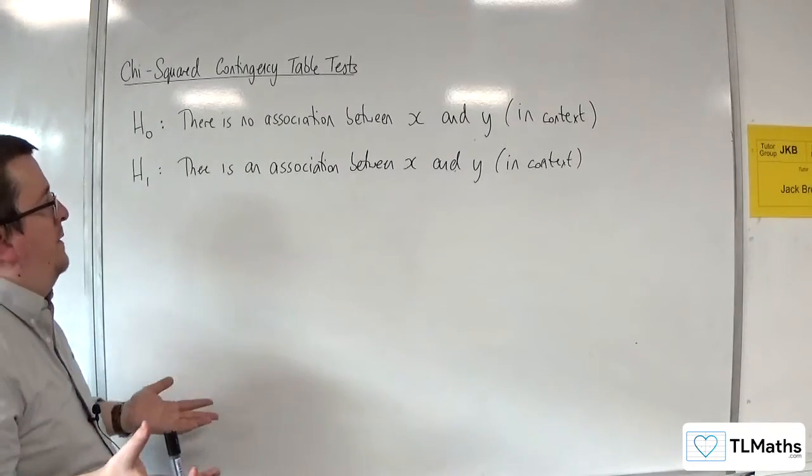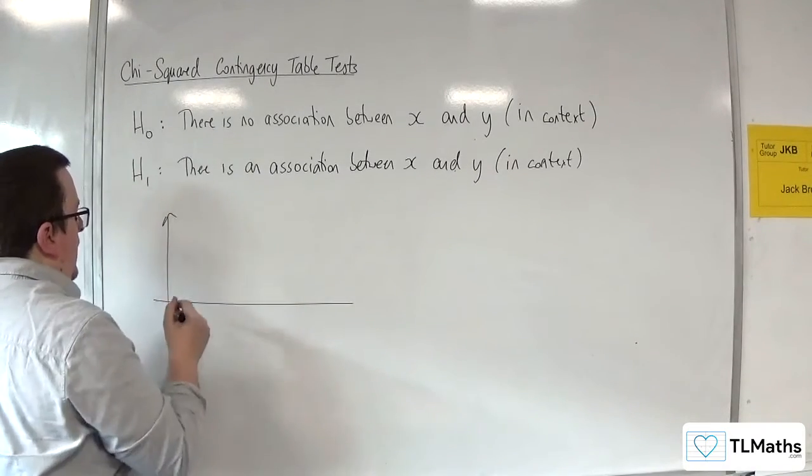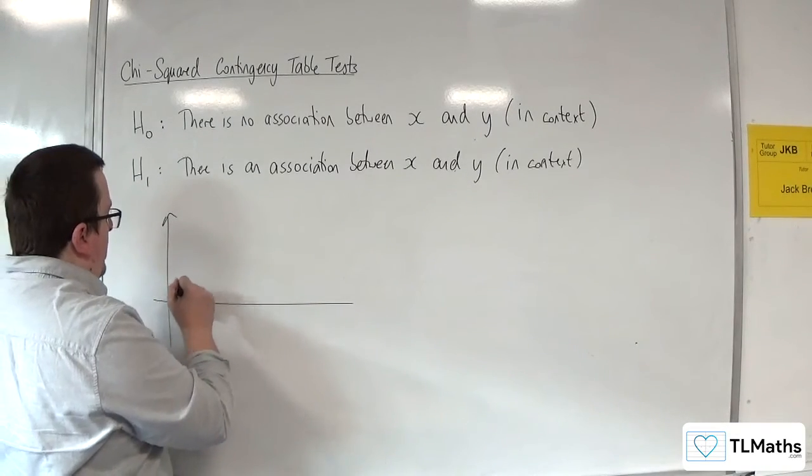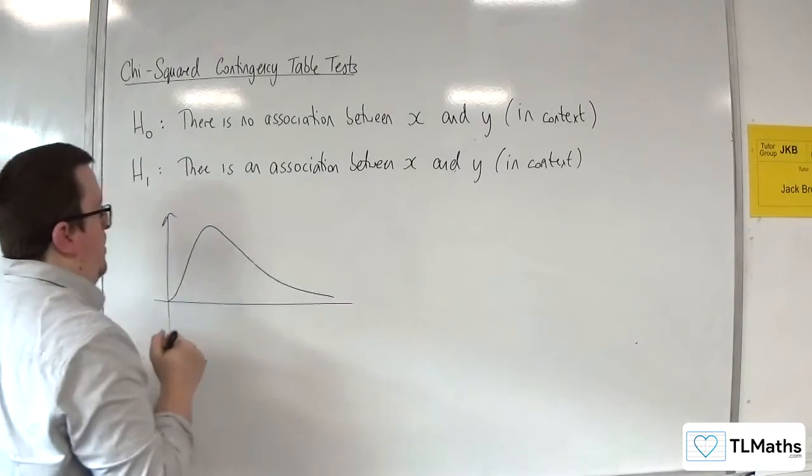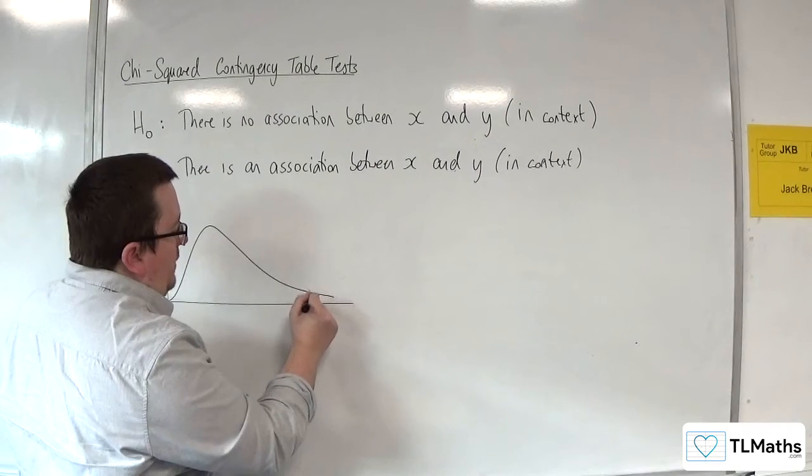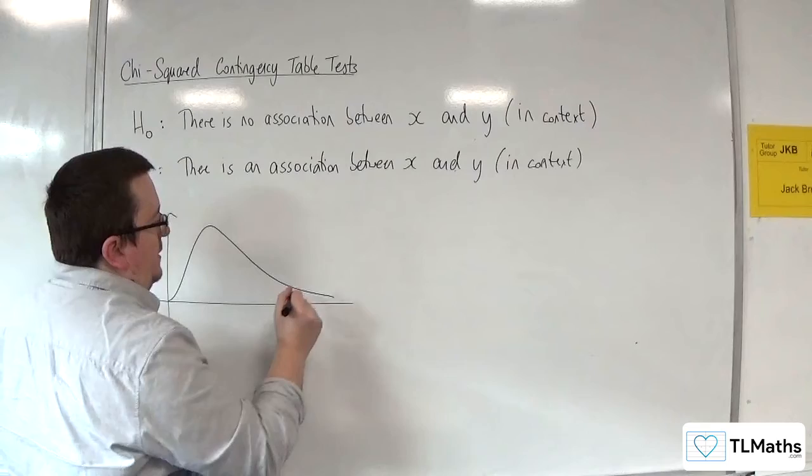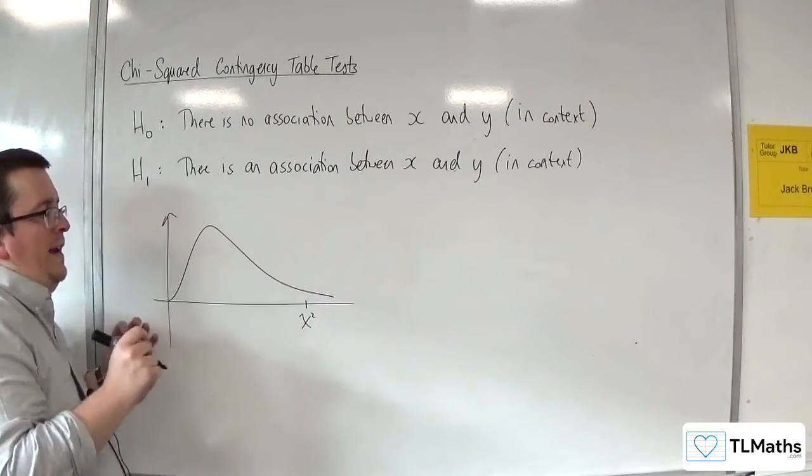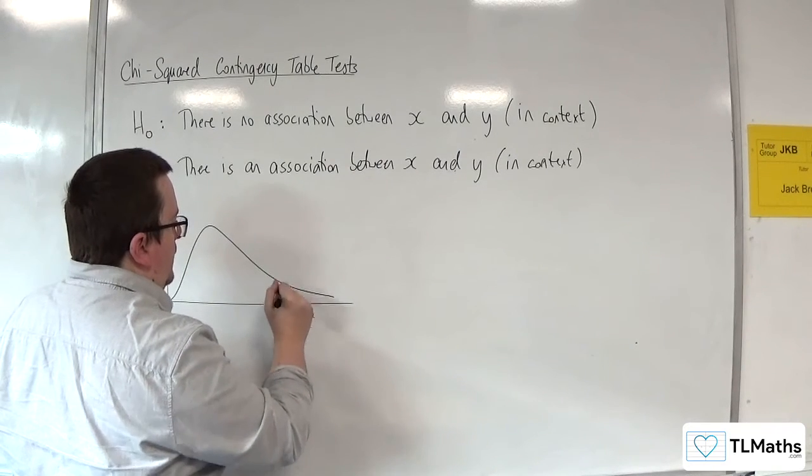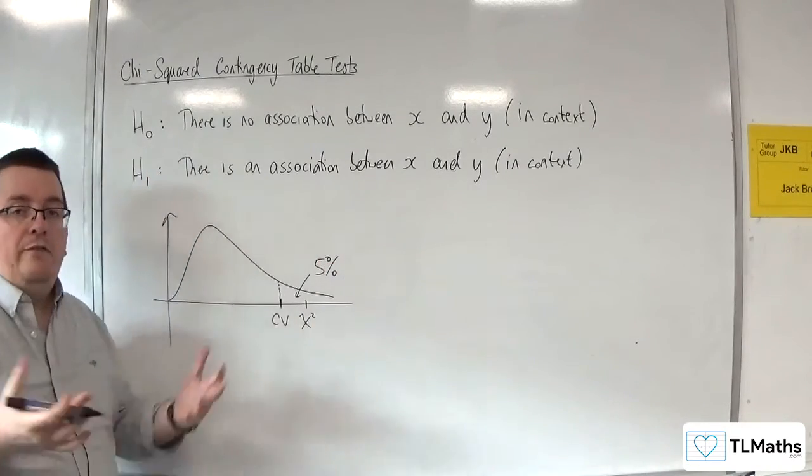The chi-squared distribution, what that looks like, and it looks slightly different depending on what we'll see as the degrees of freedom, but it kind of looks like this kind of shape. The chi-squared statistic gives you a value down here. The chi-squared statistic that you calculate, and we need to compare that against a critical value. The critical value may well be there, such that this is, let's say, 5%, a 5% significance level.